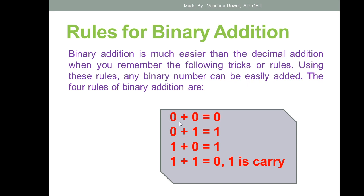The first rule says that zero plus zero is equal to zero, and zero plus one is equal to one. Then one plus zero is equal to one, and one plus one is equal to zero with a carry of one. This is the more complex state — you should always remember this rule.